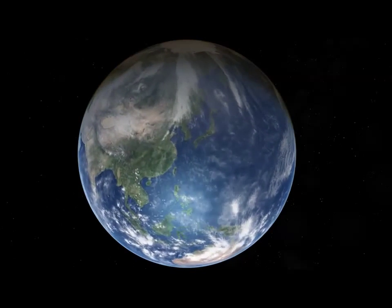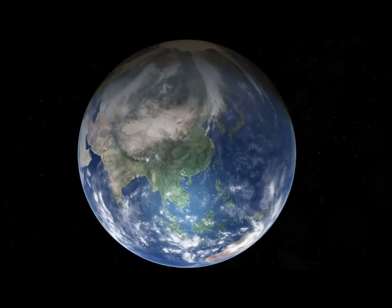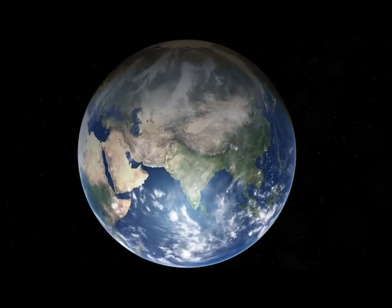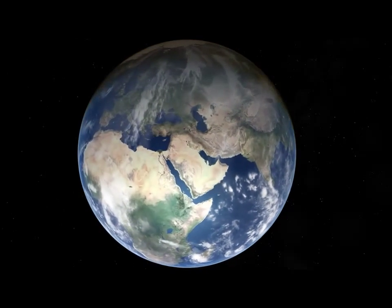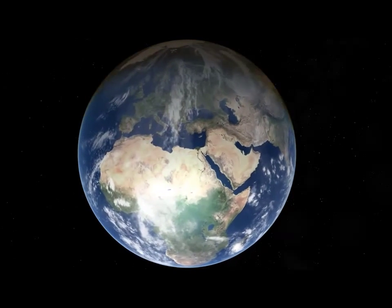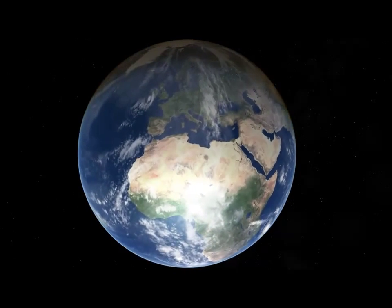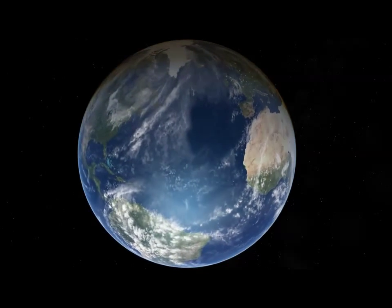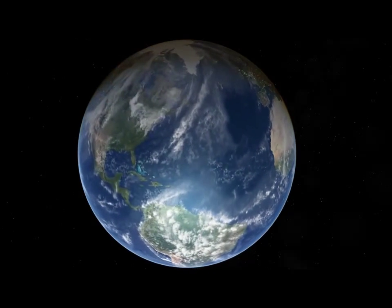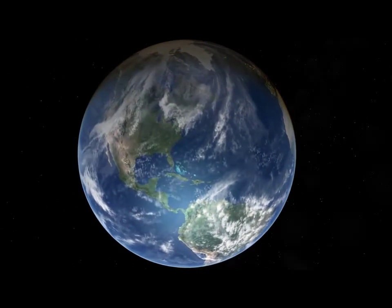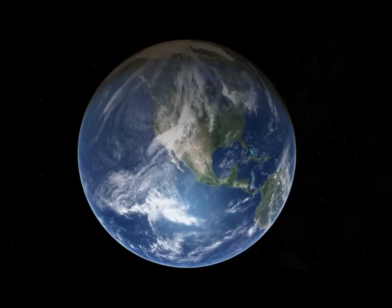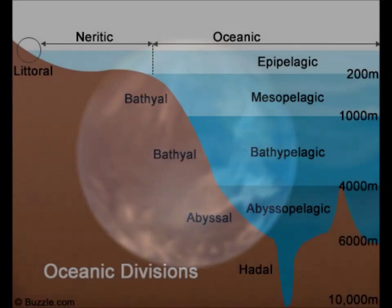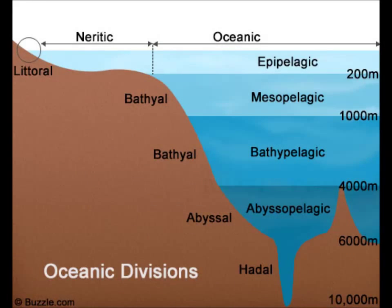Oceans cover 71% of the Earth's surface, yet most of the underwater ecosystems remain unexplored. Deep sea regions are found in every ocean across the world, starting at 200 metres, which is the beginning of the continental slope. This is where photosynthesis is unavailable due to inadequate levels of light.